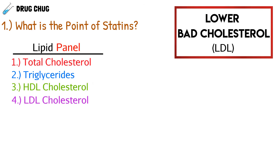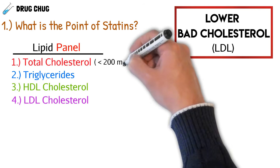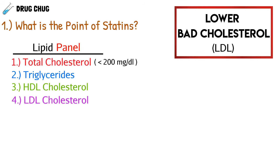The first thing we see on the lipid panel is total cholesterol. This isn't typically something we look at first — it's a general overview of how much cholesterol is in our patient, and usually we want it less than 200 milligrams per deciliter. The next thing is the triglyceride level, and here we want it less than 150 milligrams per deciliter.